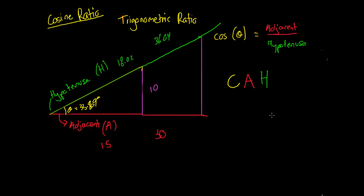So that's how we do a cosine ratio problem to work out an angle. Remember it does have to be for a right-angled triangle. I'll put out some problems for you to have a go at. Thanks.